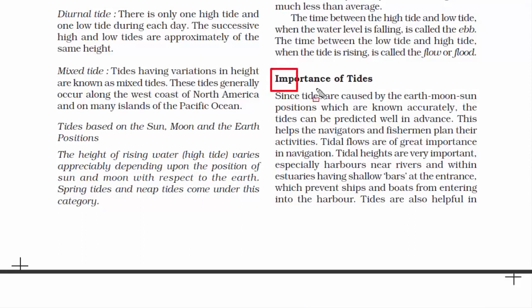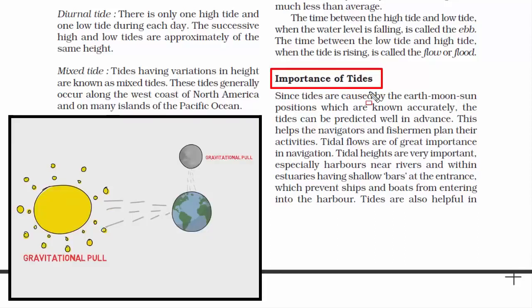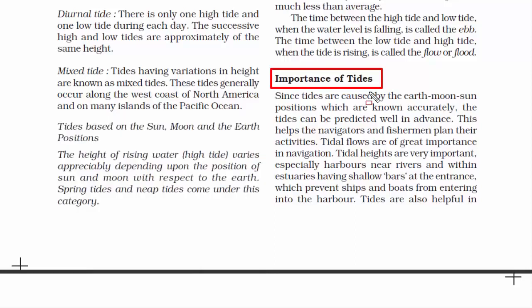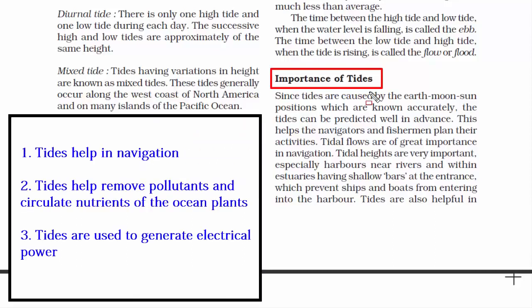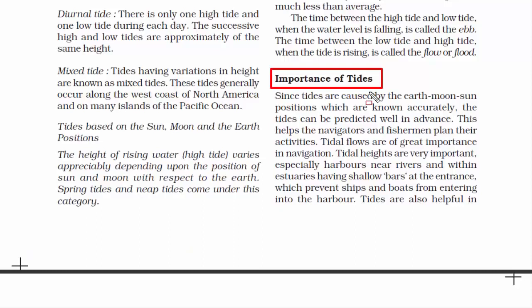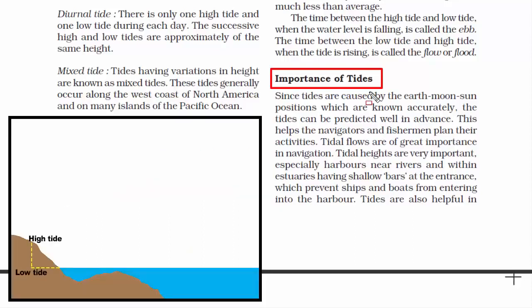Now we move to the importance of tides. Since the position of the moon, earth and sun causes tides, and today it's easy to predict their positions, it is also easier to predict when there will be high and low tides. The first advantage is that tides help in navigation. One of the main benefits of high tide is that the water level rises, making it safe for large ships to enter and leave the harbour.